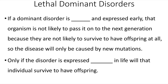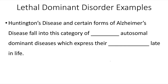If a dominant disorder is lethal and is expressed early in life, that organism is not likely to survive to pass it on to the next generation, as they won't have offspring at all. The disease will only be caused by new mutations. Only if the disorder is expressed late in life will that individual survive to have offspring. This is the case with Huntington's disease and certain forms of Alzheimer's, which are lethal autosomal dominant diseases that express their symptoms late in life.